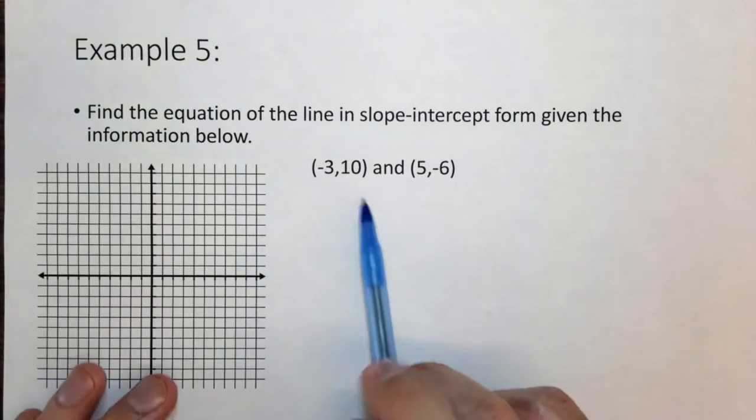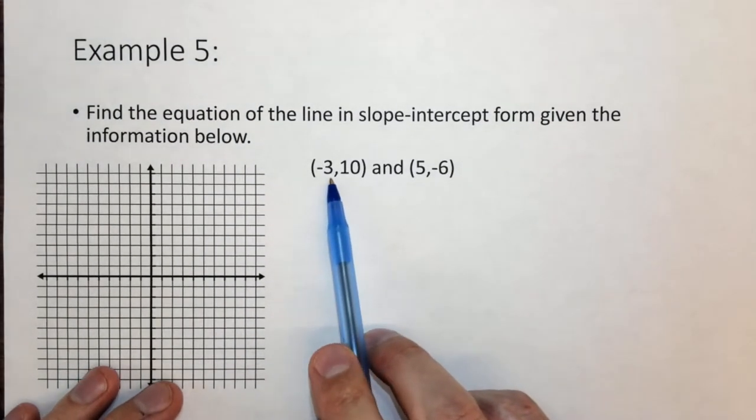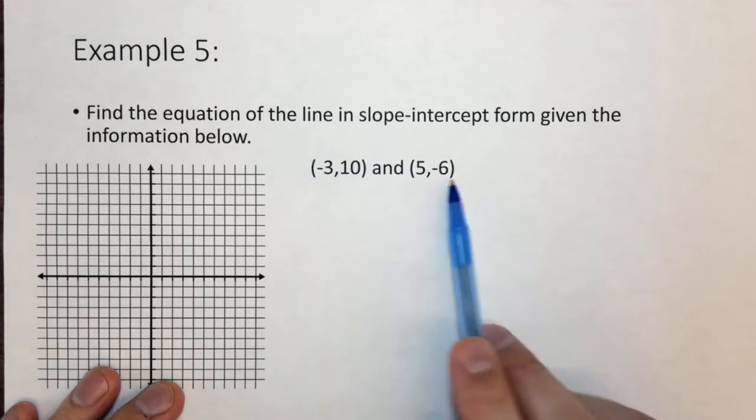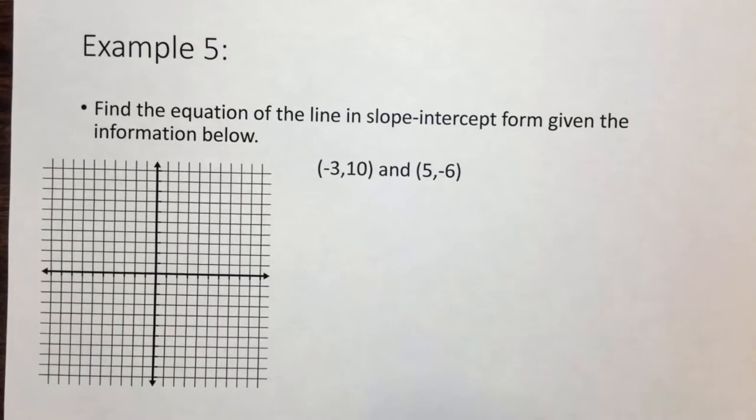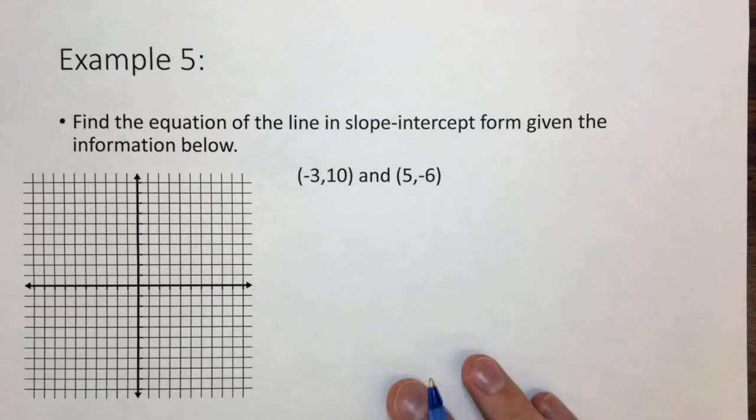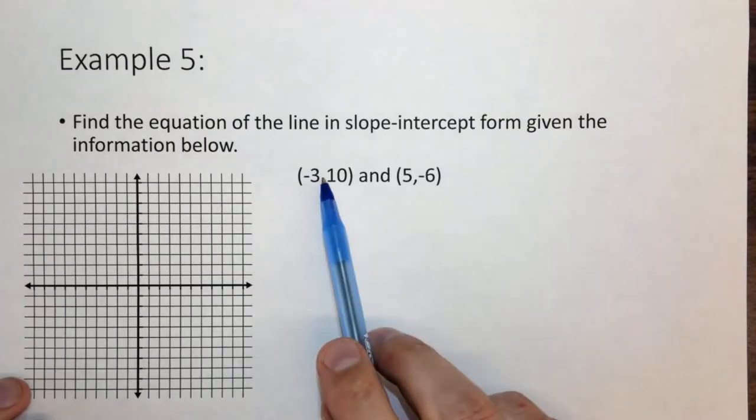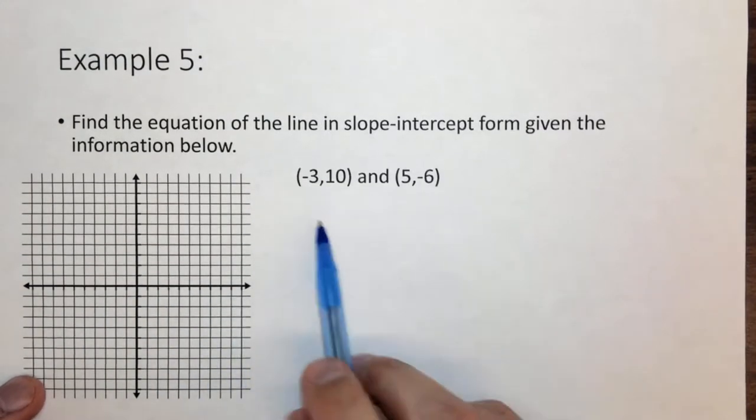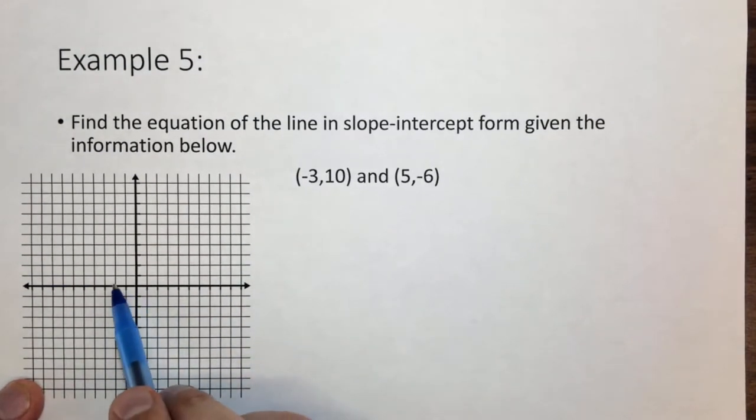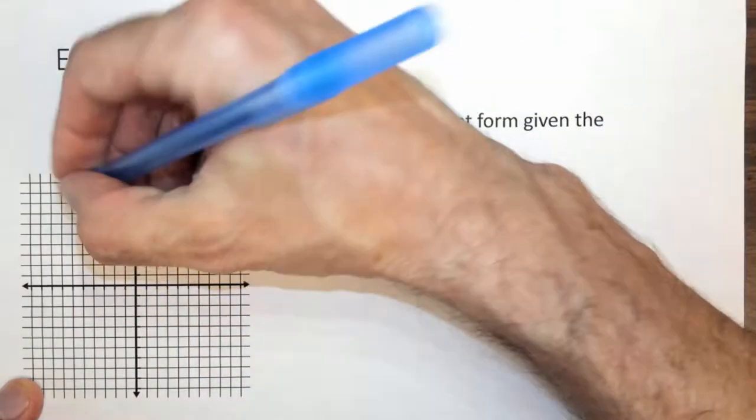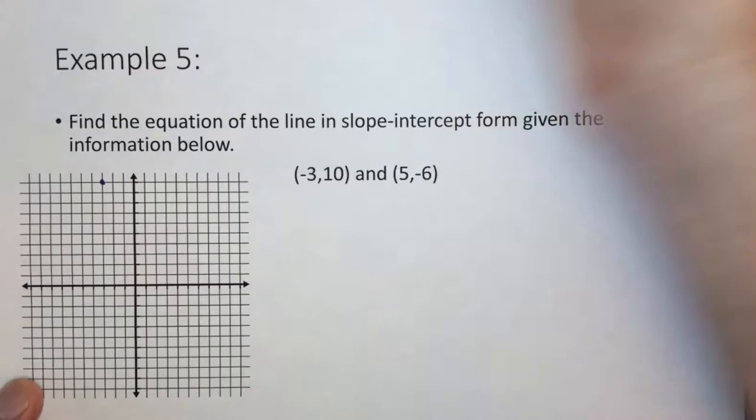So here we're given two points, minus 3, 10, and 5, minus 6. And because it's the last one I'm going to do it the opposite way. First thing I'm going to do is draw the points on the graph and then we're going to find everything out. So if we go to minus 3, minus 1, minus 2, minus 3, and go up to 10, 10 is the top. So that's right there.